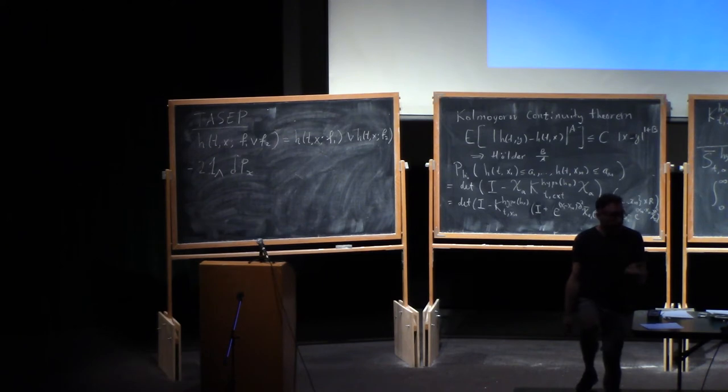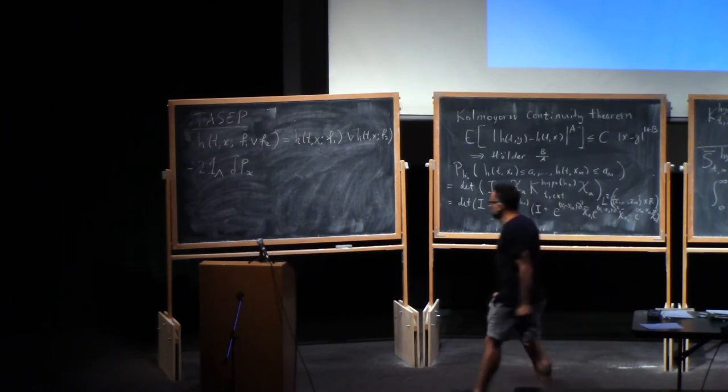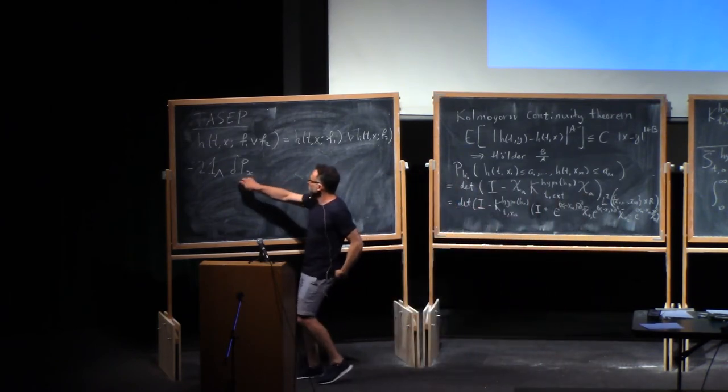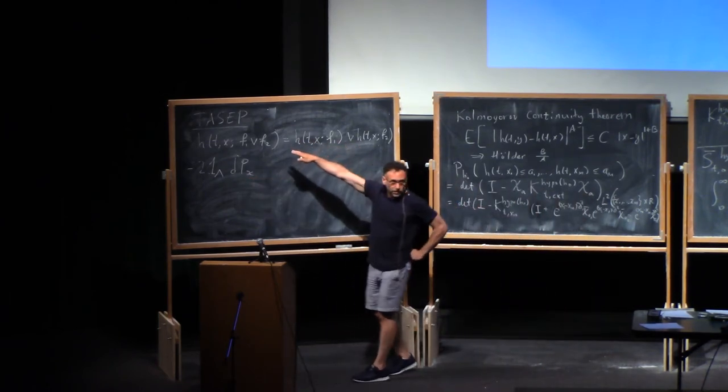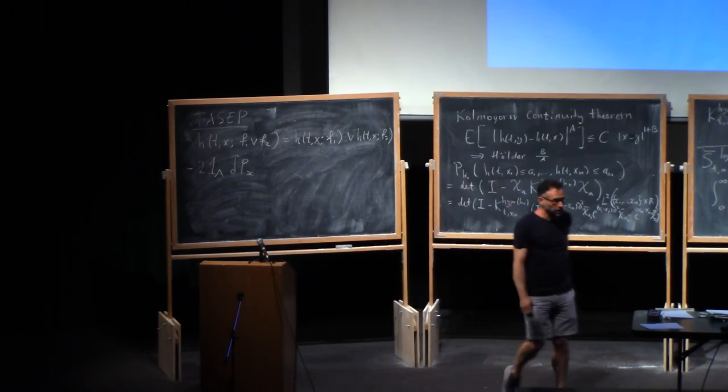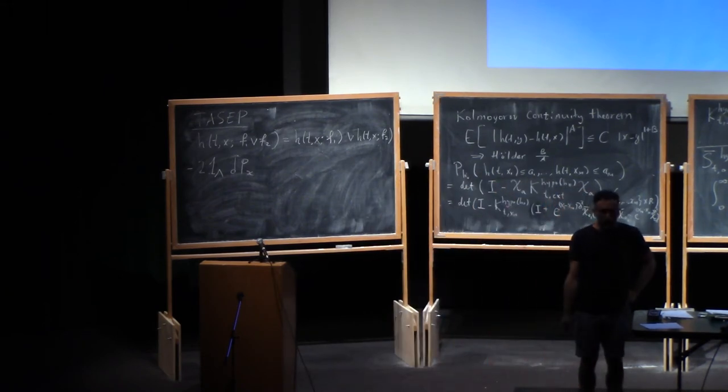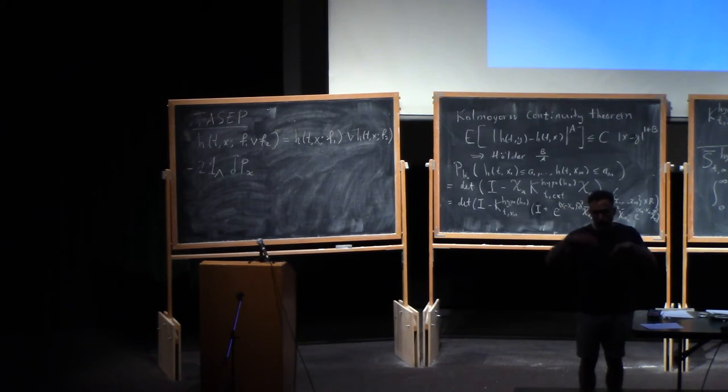So that's called the basic coupling of TASEP. You need a coupling. You need a coupling in order to be able to even say the right-hand side. So the basic coupling of TASEP is just use the same Poisson processes, and then this is just the property I just described. Just the fact that if you stay above, you start above, you stay above, is just that property.